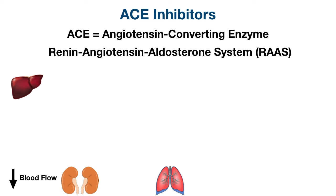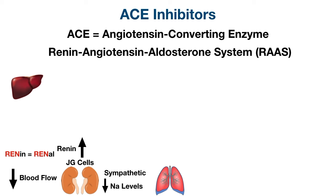Whenever there is decreased blood flow to the kidneys, the kidneys detect this and release an enzyme called renin — specifically, it's the juxtaglomerular cells, or JG cells, that secrete renin. You can think of 'renin' and 'renal' to help you remember renin is released by the kidneys. The sympathetic nervous system, as well as decreased sodium levels in the distal tubule of the kidney, can also stimulate renin release.